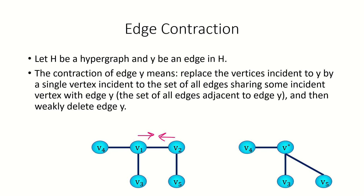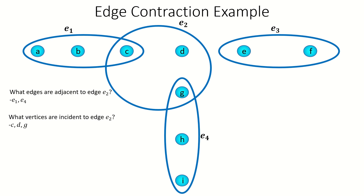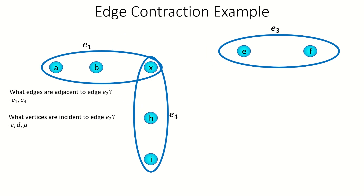To demonstrate hypergraph edge contraction, let's contract edge e sub 2 in the following hypergraph. First, list the edges that e sub 2 shares a vertex with — they are e sub 1 and e sub 4. Also, list the vertices incident to e sub 2 — that would be c, d, and g. To perform the contraction, we merge these vertices into a single vertex, let's call it x, and make sure that x is incident to all the edges that shared a vertex with e sub 2 originally. Then, we weakly delete e sub 2 from the hypergraph. This is the result of contracting e sub 2.